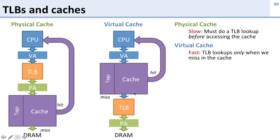The virtual cache is fast because we only have to do a TLB lookup when we miss in the cache. And if we miss in the cache, it's going to take a long time to go to DRAM anyway, so this sounds like the right way to do it.